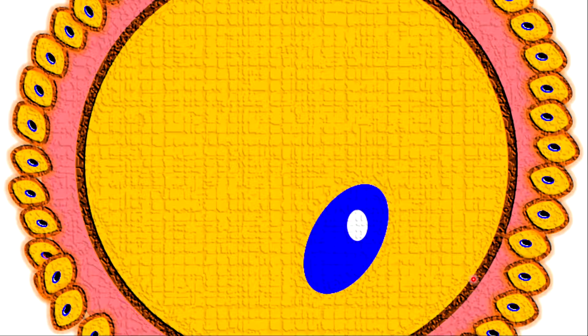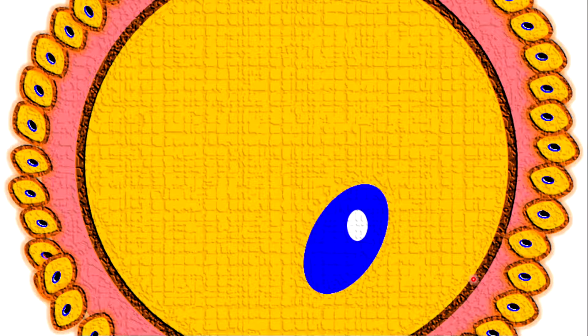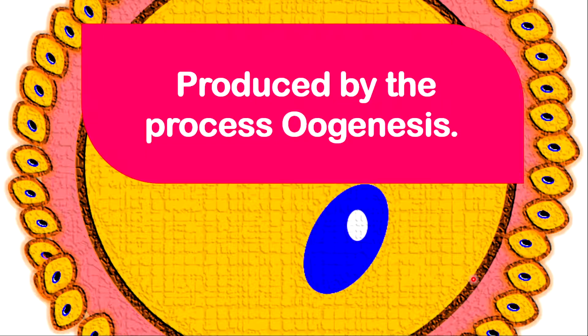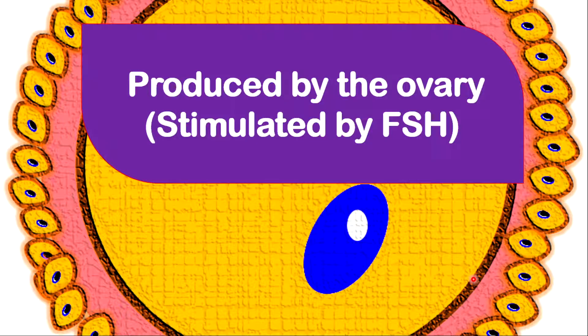Let's look at some unique facts about egg cells. Egg cells are produced by a process called oogenesis. Eggs are produced in the ovaries. The ovaries produce these eggs when they are stimulated by a hormone known as FSH. FSH is the abbreviation for follicle-stimulating hormone. FSH is produced by the anterior pituitary gland that is located in the brain.